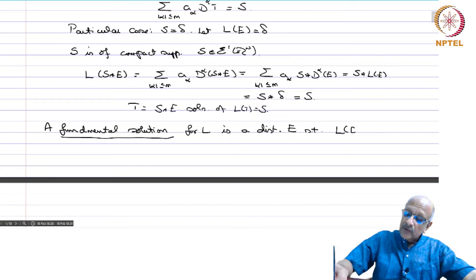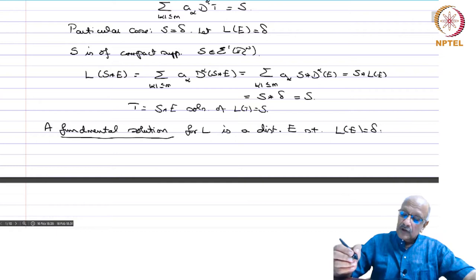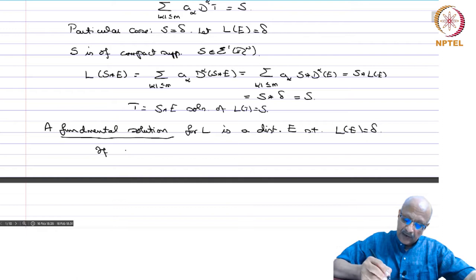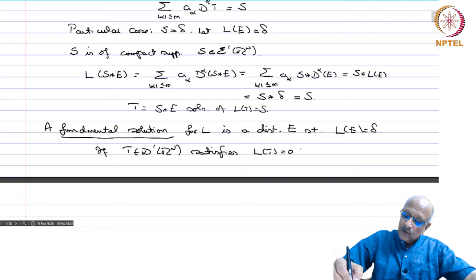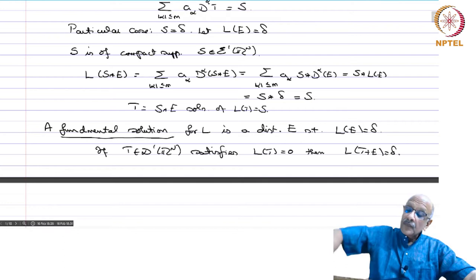I have used 'a' and not 'the' because the fundamental solution is not unique. If t in D′(ℝⁿ) satisfies L(t) = 0, then by linearity L(t + e) is also equal to δ. Therefore, you do not have uniqueness of the fundamental solution.